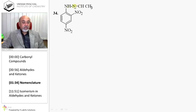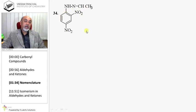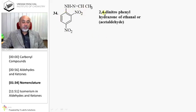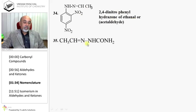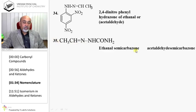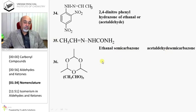Again C=NNH with a benzene having two NO2 groups — this is in fact obtained from ethanal and 2,4-dinitrophenylhydrazine, so it is known as the 2,4-dinitrophenylhydrazone of ethanal. C=NH-C(=O)-NH2 is known as a semicarbazone. Obtained from ethanal, so it is ethanal semicarbazone, or acetaldehyde semicarbazone.